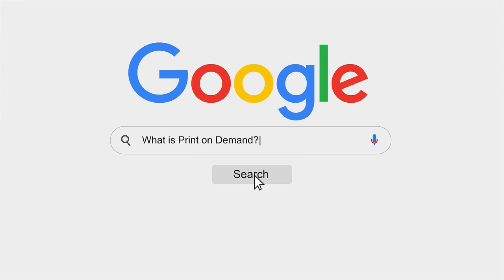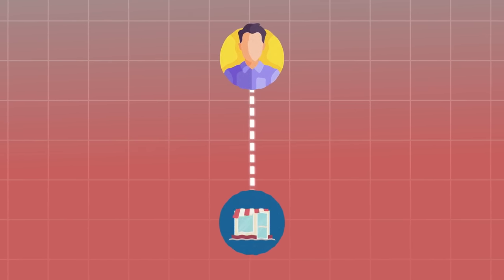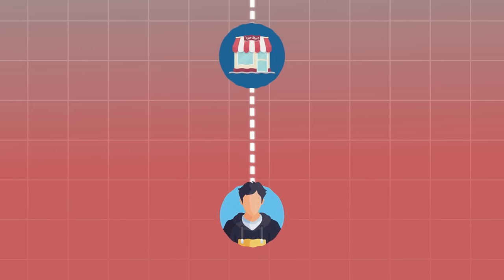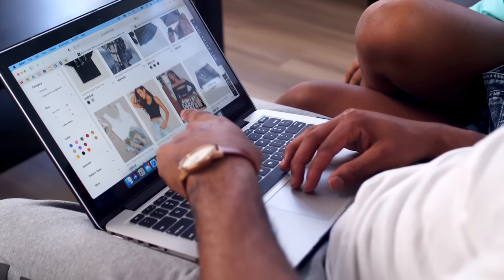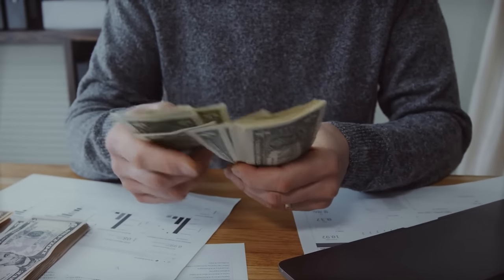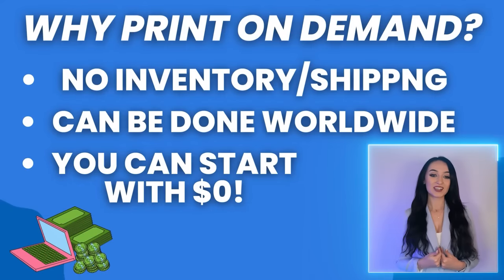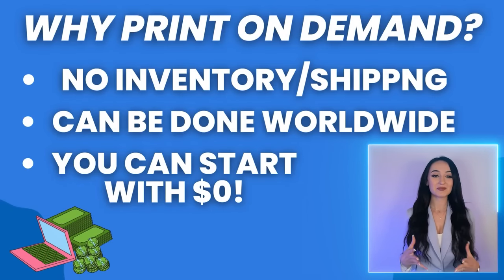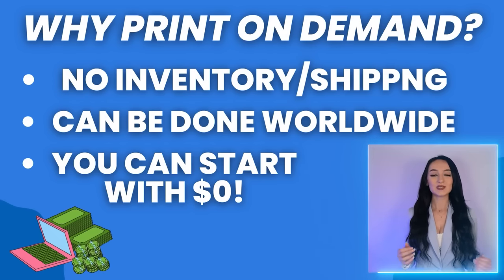So what is print-on-demand? How it works is when a customer places an order on your online store, you are the middleman between the print-on-demand service and the buyer. The print-on-demand supplier will ship that product straight to the buyer and you keep the profits. I love print-on-demand because it allows you to create custom design products without the hassle of inventory management and shipping. You can do this from anywhere in the world and you can start with zero dollars.